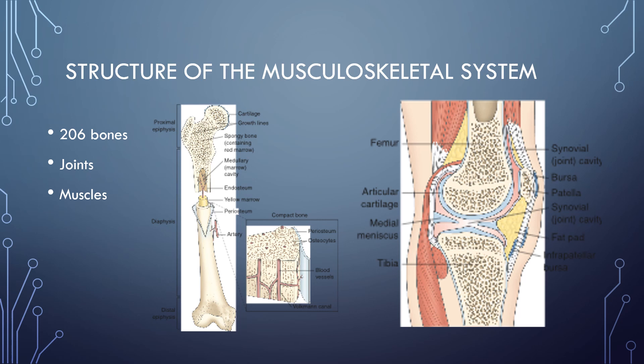Our bones all connect together to form our skeleton. Our skeleton supports the soft tissues of the body, protects crucial components of the body, gives surfaces for the attachment of muscles, tendons, and ligaments, and provides storage areas for minerals and fat, and also produces blood cells.